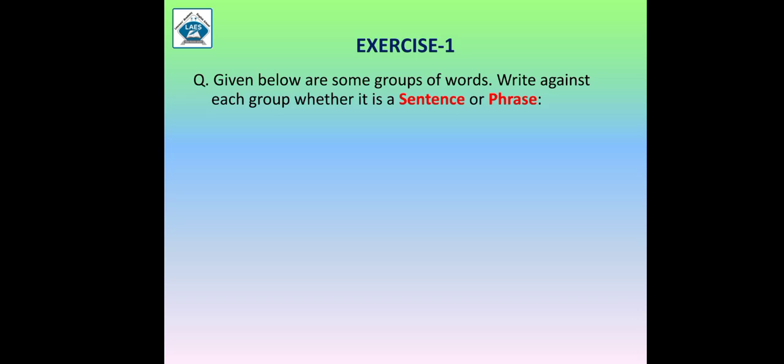Now let us solve the exercise. Question 1: Given below are some groups of words — write against each group whether it is a sentence or a phrase. There are some groups of words given to you, and you have to identify whether it is a sentence or it is a phrase. Let us start.